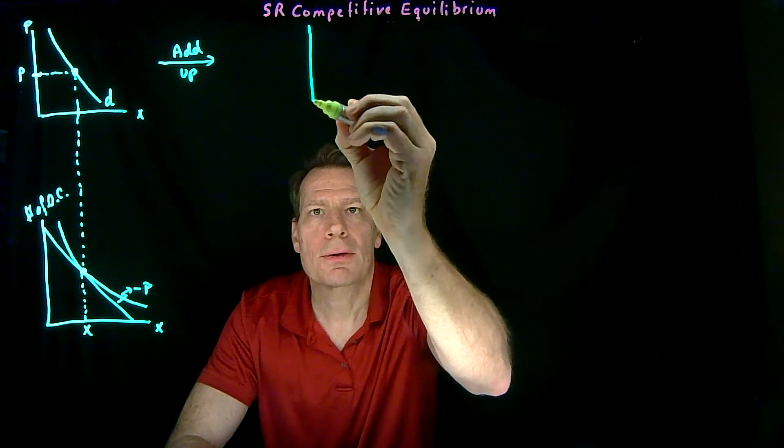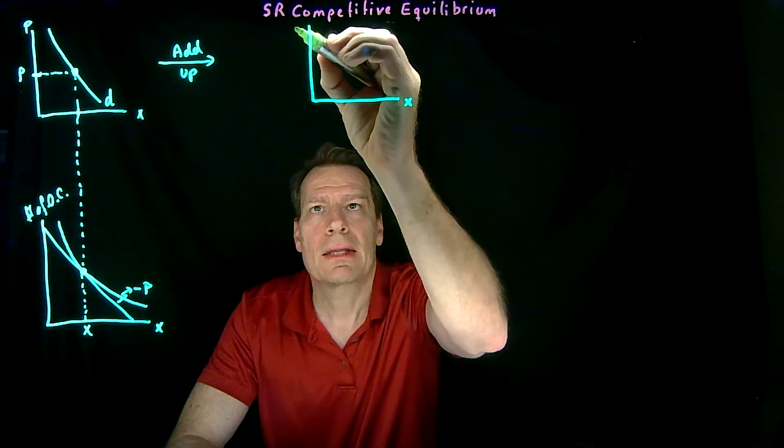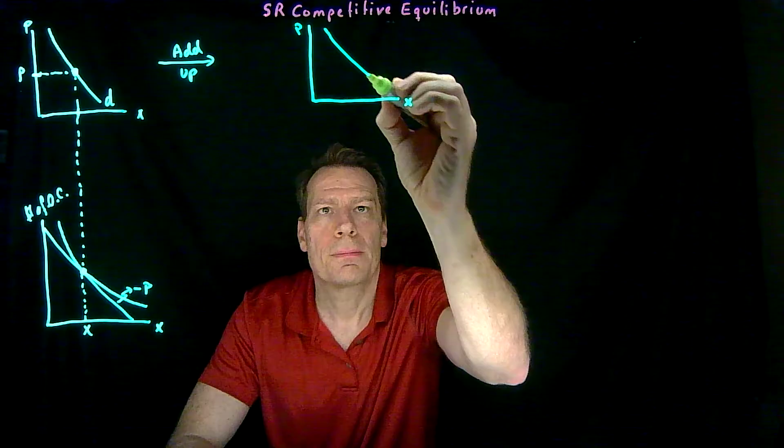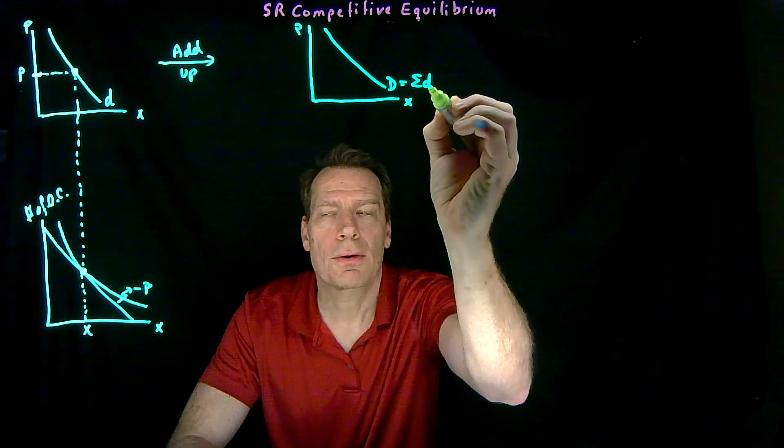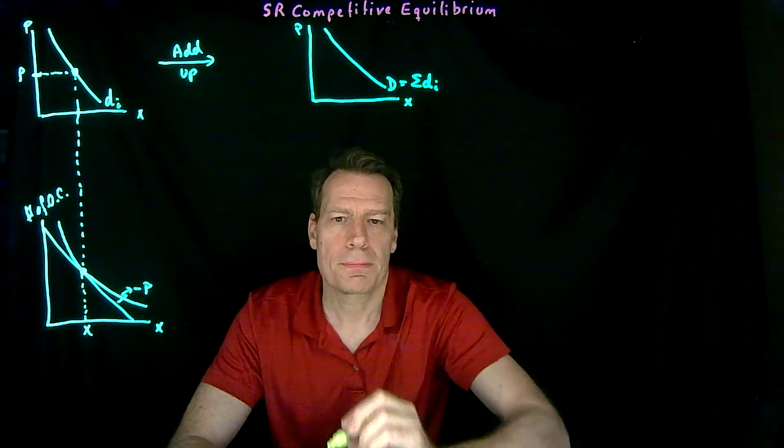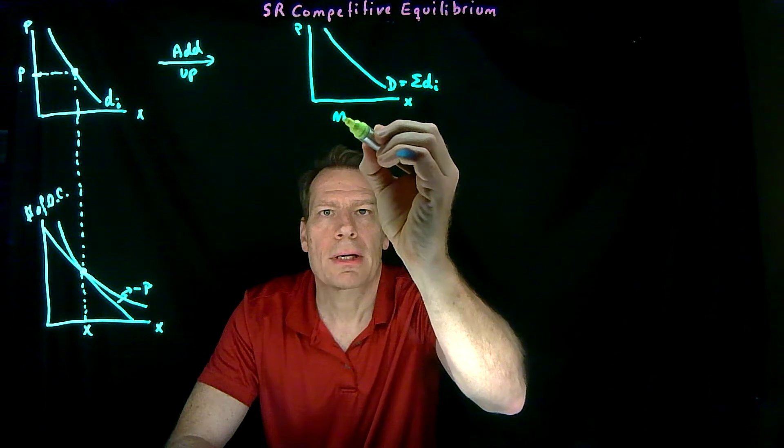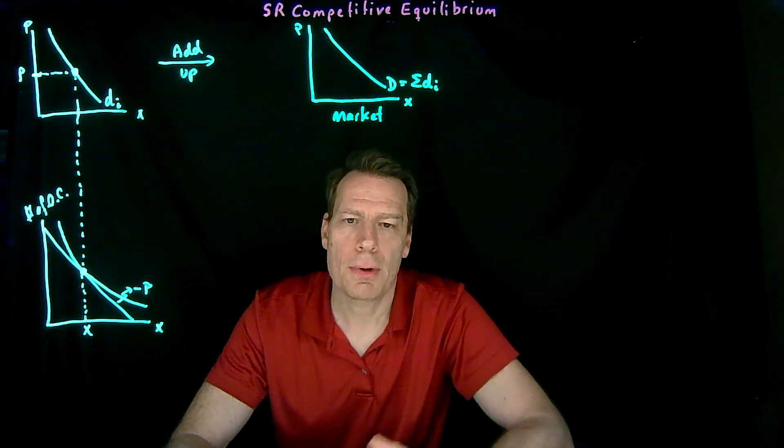And when we do that, we get the market demand curve. So in the market for the good x, we get a demand curve that's just the sum of the individual demand curves of each of these consumers. So this will now be the market. And we've derived one side of the market.